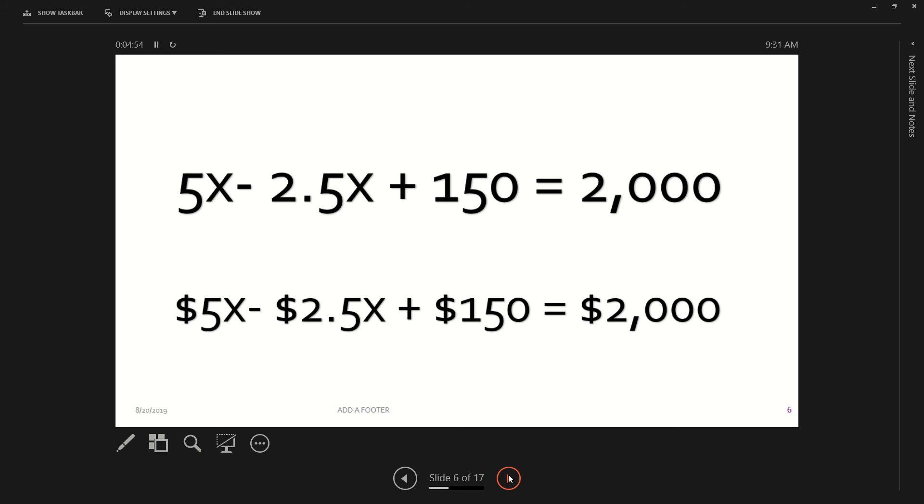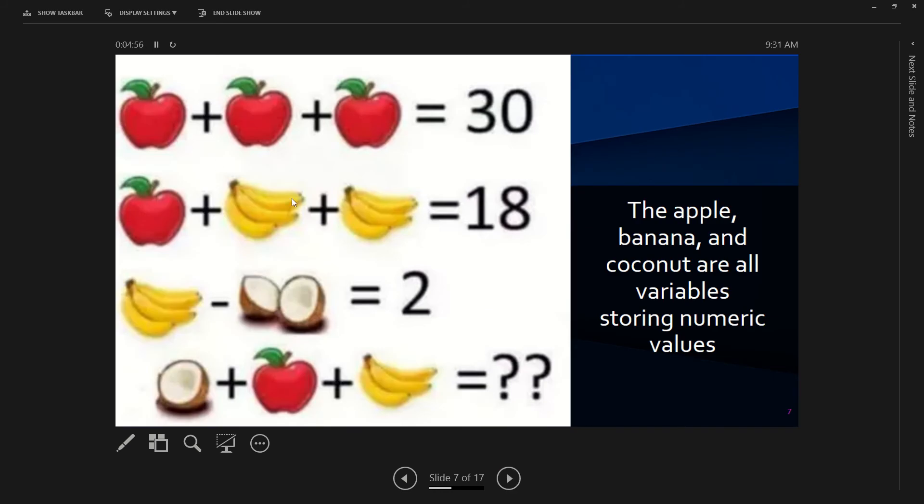Here's another example of how variables are used. Each of these different symbols, apple, banana and coconut, each of those are equal to a different value. In your notes, I want you to take a minute, pause the video if you need to, but I want you to figure out what each variable is worth. I'll help you with the first one. We know that apple plus apple plus apple equals 30.